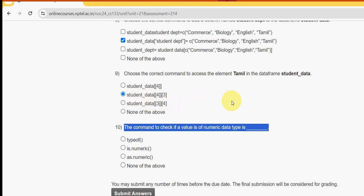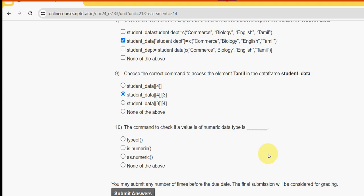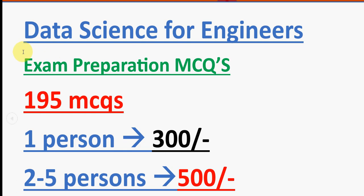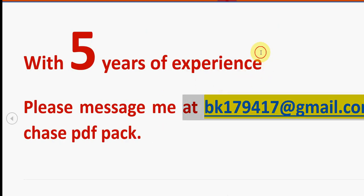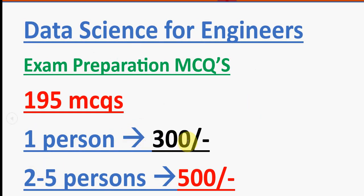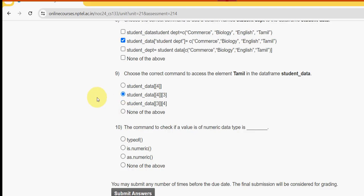Tenth question — the final question of this assessment: the command to check if a value is of numeric data type is — for the tenth question the probable answer I got is the second option, is.numeric(). So mark second option, is.numeric(), as the correct answer for question ten.